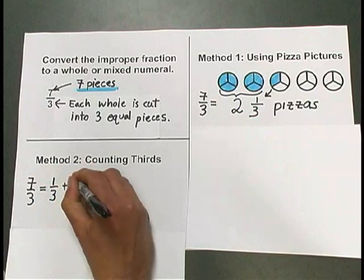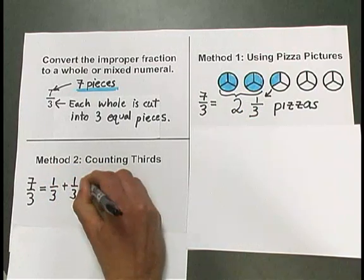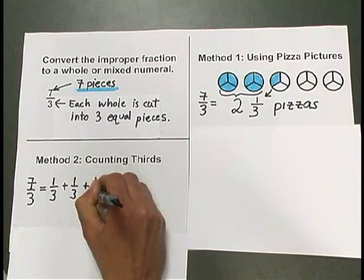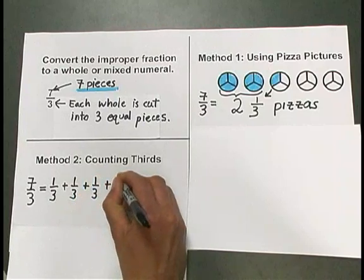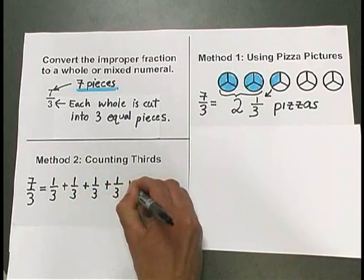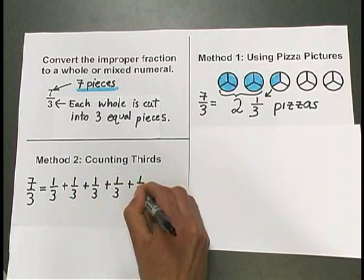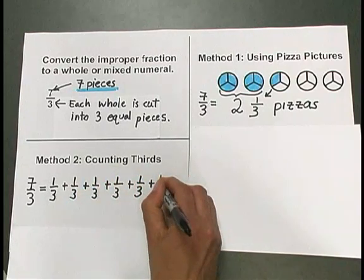like when we used our pizza pictures to help us do this problem. So I have one copy of 1 third, plus another, plus another, plus another, that's 3, plus another, that's 4, plus another, that's 5, another is 6,